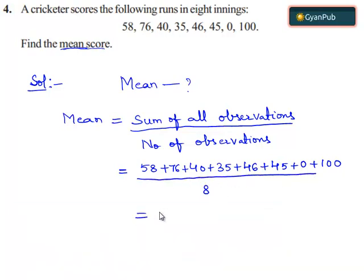When we solve this we get 400 divided by 8, which equals 50. Therefore, the mean score of the cricketer is 50.